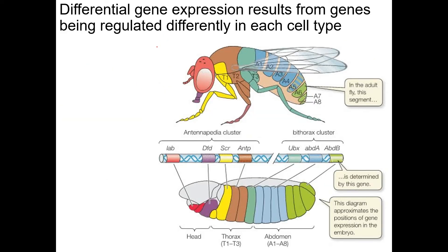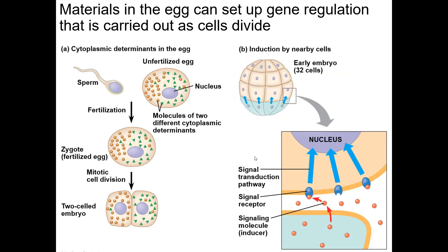Differential gene expression results from genes being regulated differently in each cell type. We talk a lot about model organisms — you've seen the fruit fly example many times. The reason is that fruit flies have a really quick generation time, making them much easier to study than even something like a mouse. A model organism is just an organism that's simpler and easier to study, with fewer genes needed to get the basic body plan. All the cells in the larva have the same DNA, but certain genes turn on only in specific cells and not in others.